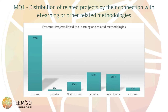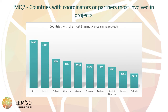The first mapping question is related to the distribution of projects by their connection with e-learning and other related methodologies. As it can be seen on the graphic, the amount of projects related to e-learning is much bigger than in the case of mobile learning, blended learning, ubiquitous learning, and other methodologies.